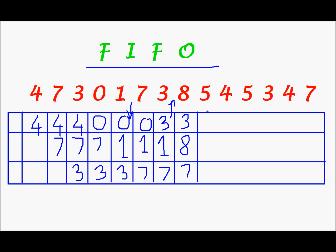I will be a bit more fast now. So 3 will be where it is, 8 will be where it is, and 7 shall be replaced by 5, because 7 was the first to be brought in among these frames. Next, I have to bring in 4. So out of 3, 8, and 5, 3 was the first page to be brought in, so in place of 3 I shall write 4. And then 8 and 5 will be where they originally were.